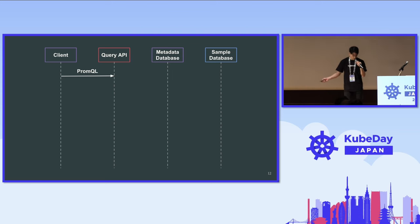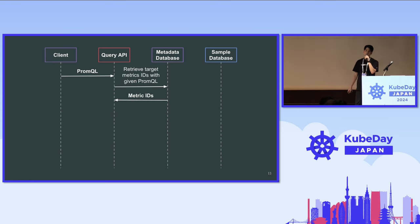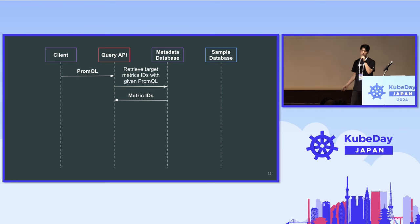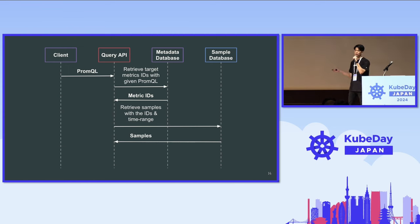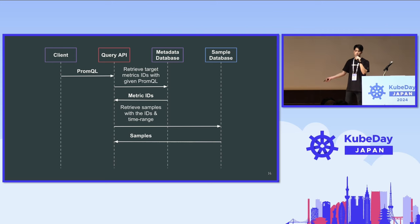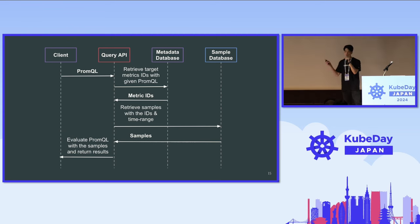Let's look at our query path in the system. Our client tries to send a PromQL request to our query API. This API retrieves target metrics IDs with the given PromQL and time range, requesting the metadata-specific database. Then it retrieves samples with the given target metrics IDs and time range from the sample-specific database. Finally, the API evaluates the samples with the PromQL engine and returns results to clients.